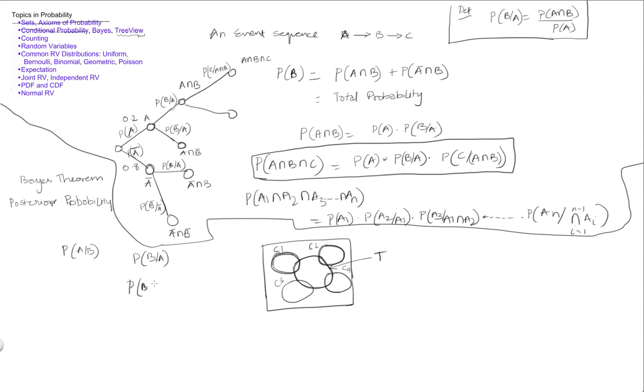And so probability of B given A is, so we can derive Bayes' theorem by realizing that probability of B given A is probability of A intersection B by probability of A. Probability of A itself can be written as, so we can rewrite this as A intersection B by, if I want to find out what the probability of A is,